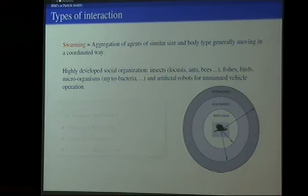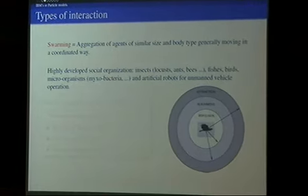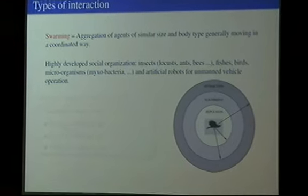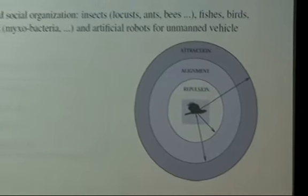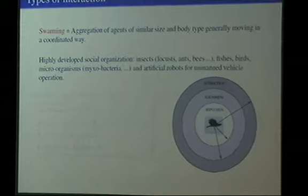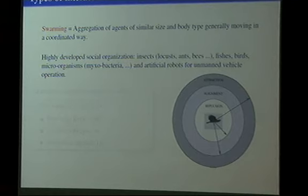I put fish — schools — and birds, because they are the most attractive and you can find them easily on the internet. But you also find a lot of examples from insects, locusts, ants, bees, and a mix of bacteria and microorganisms also develop this kind of behavior. It's also interesting from the point of view of control engineering, meaning you want to mimic this behavior with robots — some model able to describe this kind of motion to control autonomous robot operation.